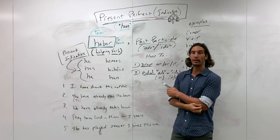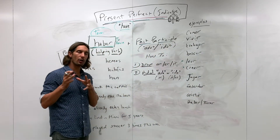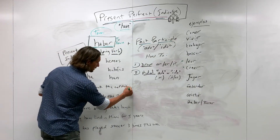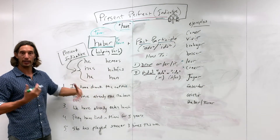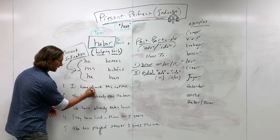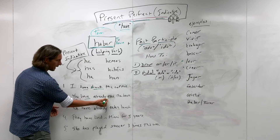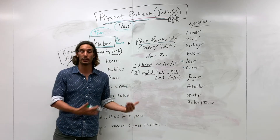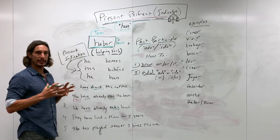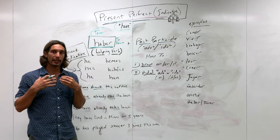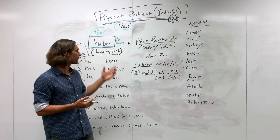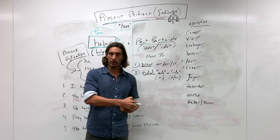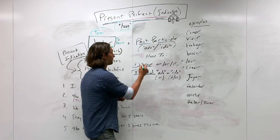The structure is: a helping verb conjugated to agree with the subject, followed by the past participle. I'll start with 'haber' and its conjugations, then show how to create past participles, and then bring it together by looking at translations. 'Haber' is the helping or auxiliary verb used with every single perfect tense. For example, for the future perfect, it would be 'haber' in the future tense plus the past participle.